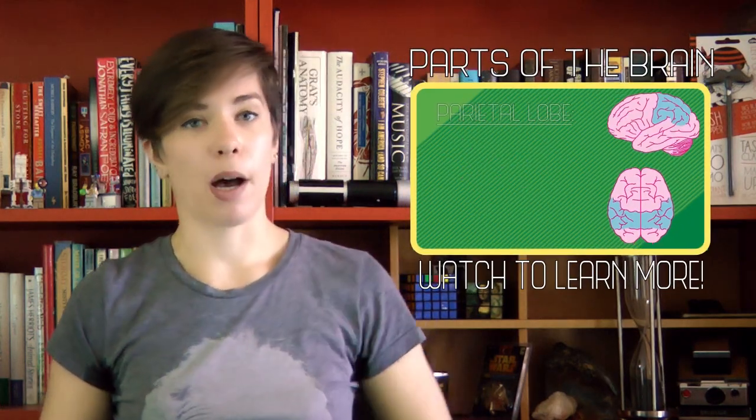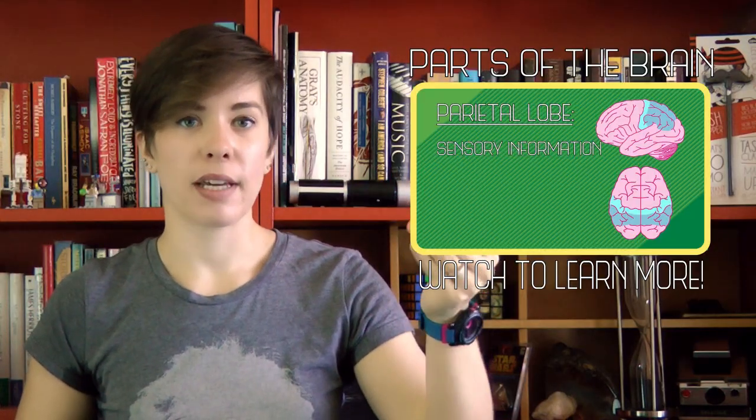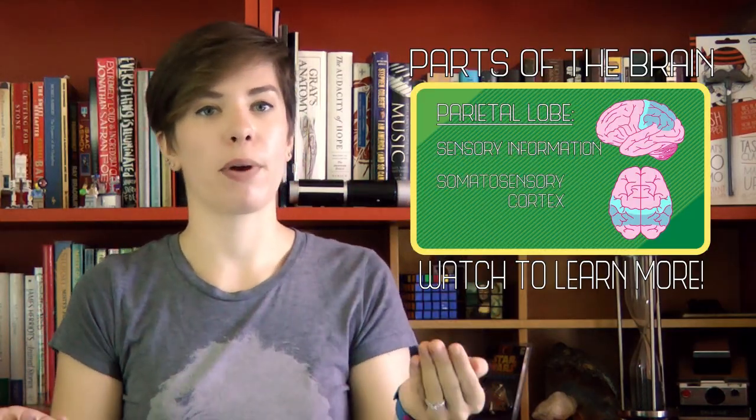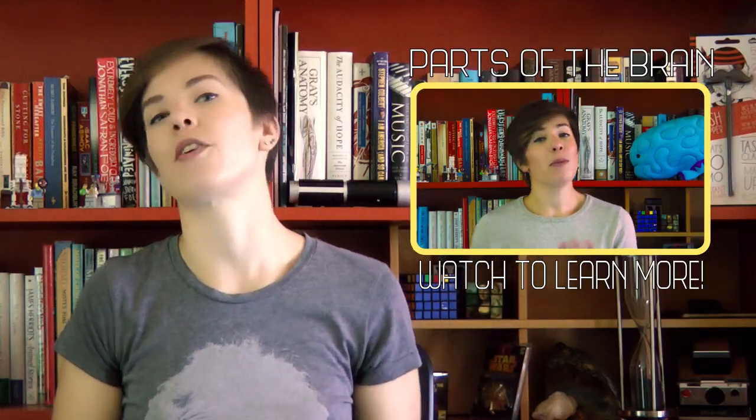Remember how I told you that the parietal lobe is responsible for the way you sense your body? Well, this stream to the parietal lobe, the dorsal stream, is sometimes called the where pathway, because it's where your brain processes where things are in space, including the location of your body. This stream is helpful for seeing motion and consists of fast, mostly unconscious sorting of spatial information.